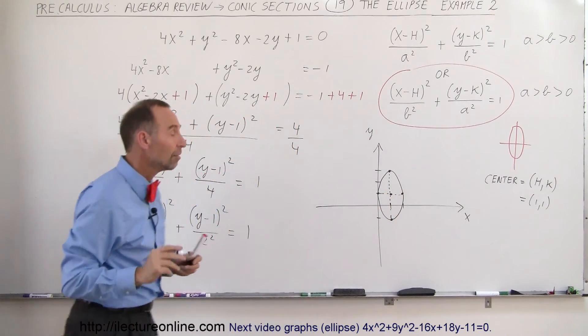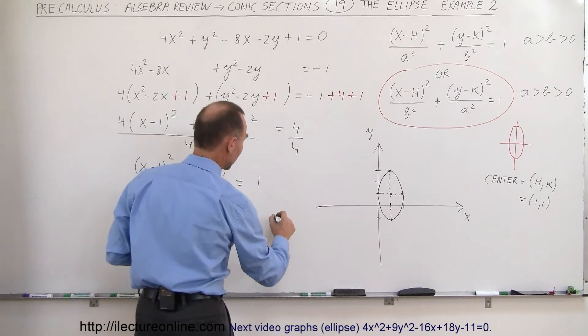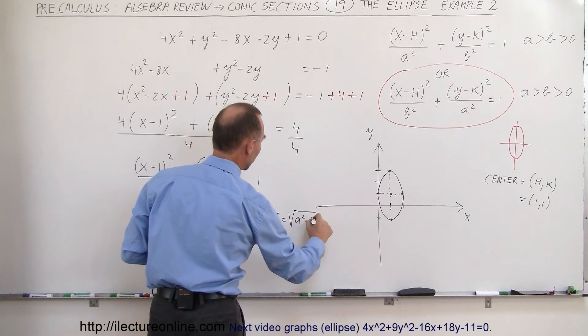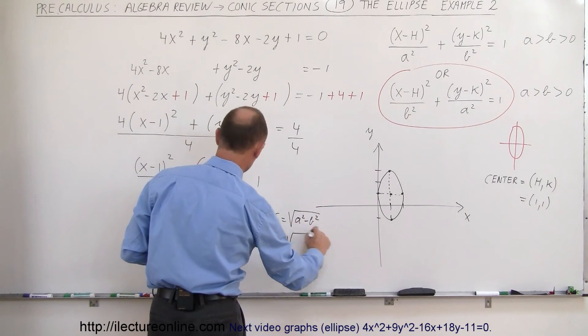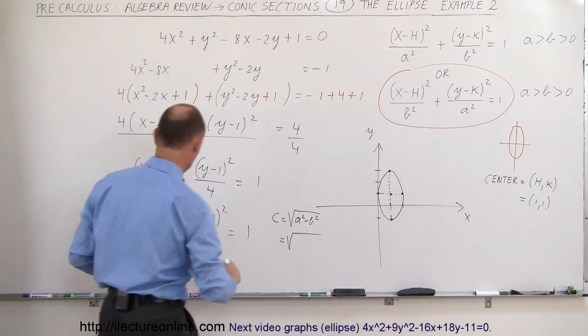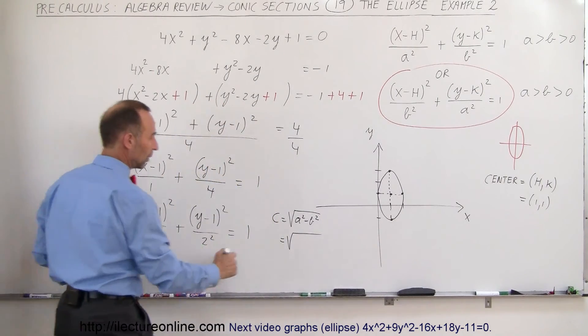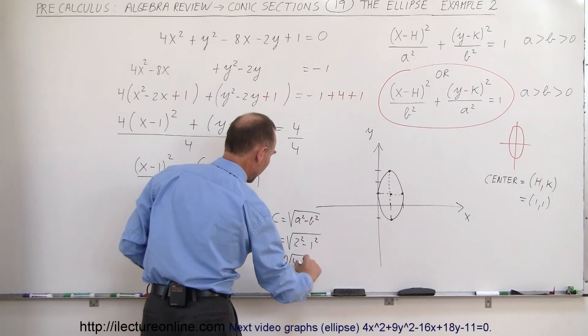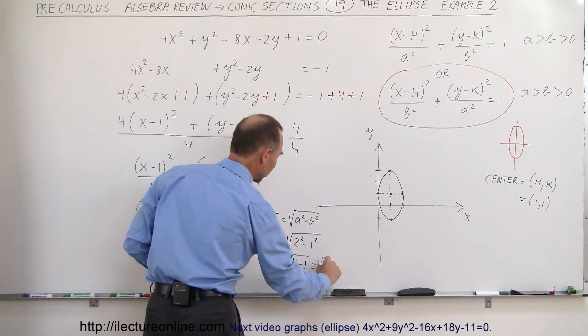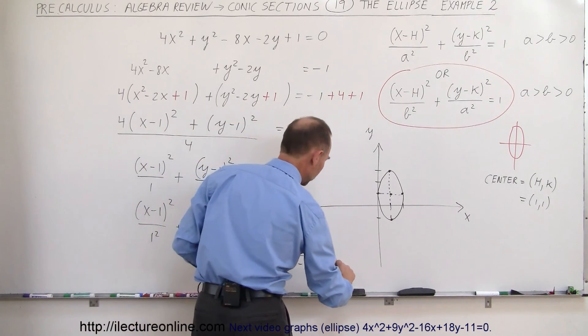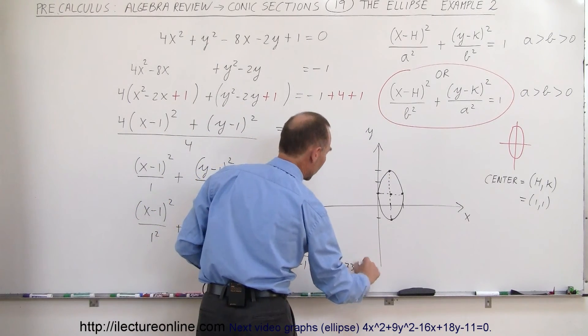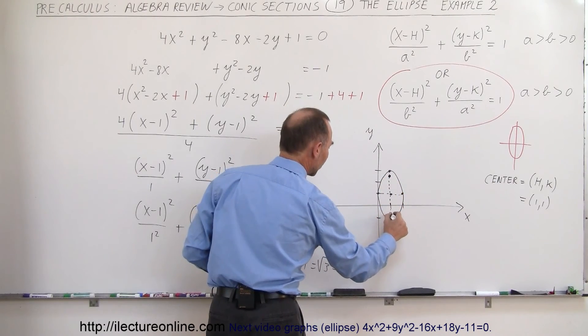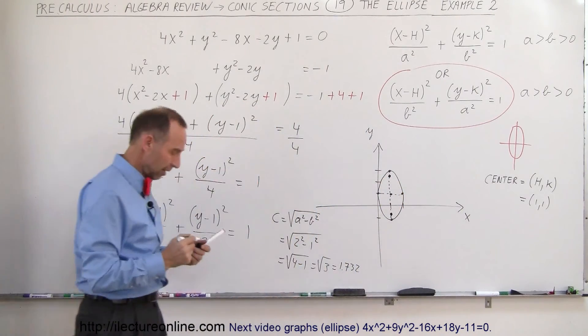Now, where are the foci? The foci can be found when I find c. c is equal to the square root of a squared minus b squared, and so it's equal to the square root of a squared, well a squared is right here, that's 2 squared, minus 1 squared, so it's equal to the square root of 4 minus 1, which is equal to the square root of 3, which is about 1.732, 1.732. That means that the foci is at that point and that point, so that's where you find the two foci of the ellipse.